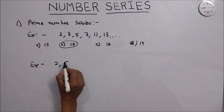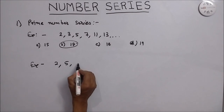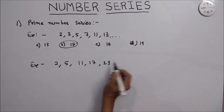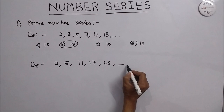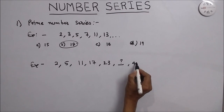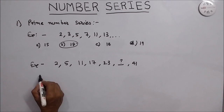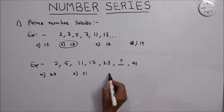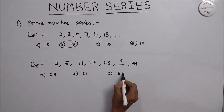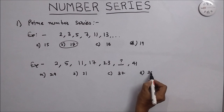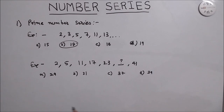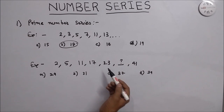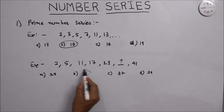We take another example: 2, 5, 11, 17, 23. We have to find the next number, and the answer is 41. Options are: A is 29, B is 31, C is 37, and D is 39. We can clearly see that the prime numbers are written in alternates. The alternative prime number after 23 is 31.